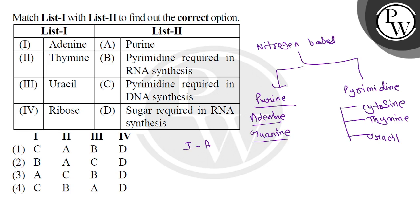Now let's talk about thymine. Thymine is a pyrimidine which is found in DNA. Uracil is also a pyrimidine found in RNA. The difference is that cytosine is present in both RNA and DNA, but thymine is present in DNA and uracil is present in RNA. So the answer for thymine is C.